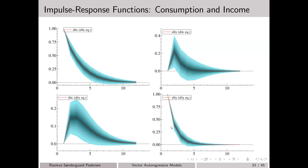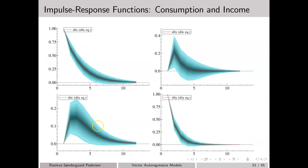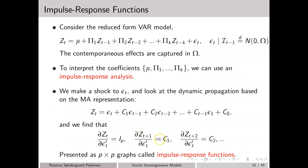A simple example is the bivariate VAR model for the growth rate in consumption and income estimated in a previous video. A shock to the error term in the consumption equation gives a response of 1 to the change in consumption at time 0, but there is no instantaneous effect on the income variable. Likewise, a shock to the error term in the income variable has no instantaneous effect on the consumption variable. As time moves on, there may be some responses due to the structure of these c matrices.